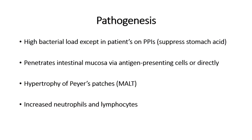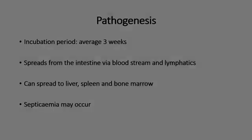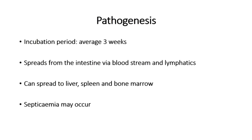Rarely, this tissue congestion grows, leading to abdominal perforation and systemic side effects. The incubation period for the disease is on average three weeks. The organisms first are located in the bowel, but may then spread via the bloodstream to tissues such as the liver, the spleen, and the bone marrow.